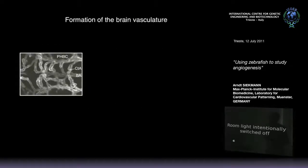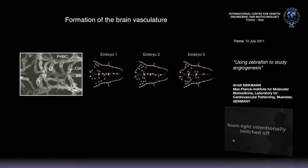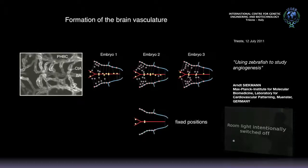When comparing different embryos, the position and number of central artery sprouts are the same in every embryo. However, the number and position of interconnections among them differs, as does the position of connections to the basilar artery, with the exception of four fixed positions. So for the first time, there is variability, and based on the vascular pattern you can identify individual embryos.